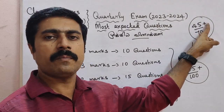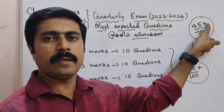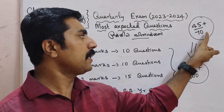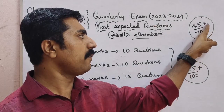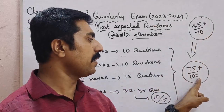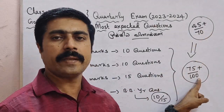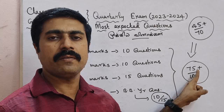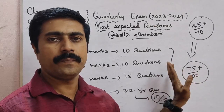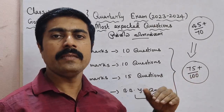45 plus is 50. So 70 is 45 plus — that is 100 to 30 marks. So 75 plus is 70, meaning we have to get 80.